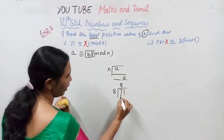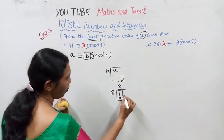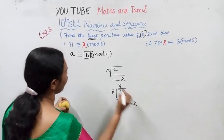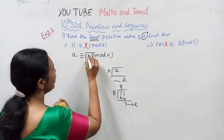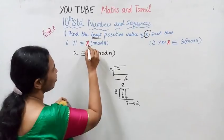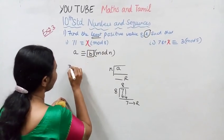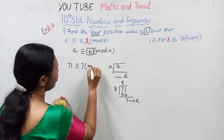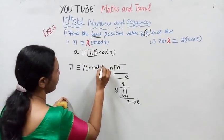You may find that 8 times 8 is 64, remainder 7. This is 7, 71 congruent 7 mod 8.